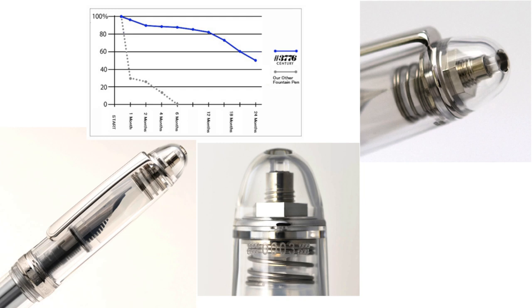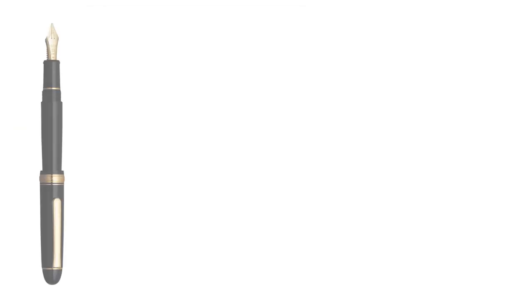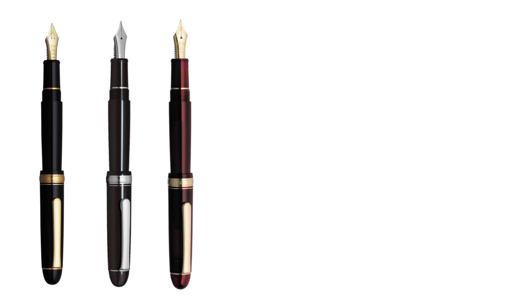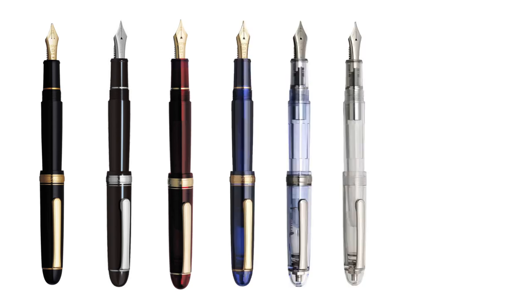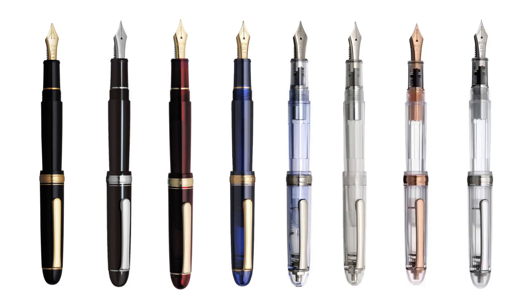Specific models that are part of the 3776 Century line include the standard black with gold or rhodium trim, the Bourgogne, the Château Bleu, the Shoji, the Tsai, the Nice, and the Nice Peur.